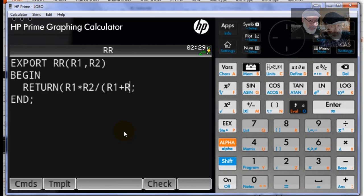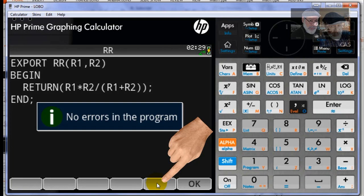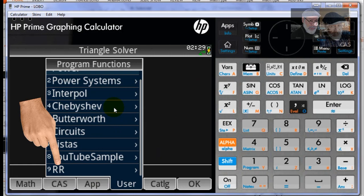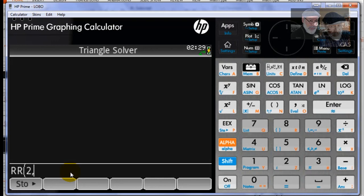When we check the validity of the program, it checks not only the syntax, it also compiles the program and makes it available under home or CAS. Where is that? User, RR the folder, and the program is RR. Let me use it. The parallel of two resistors, two ohms and seven ohms, is 1.555. That easy.